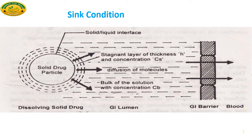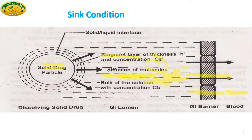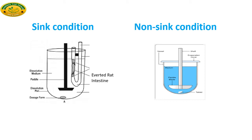From this figure, you can get a clear idea of the sink condition. Here you can see the solid drug particle — or the tablet — and the bulk of solution with concentration Cb. The solid drug particle diffuses from the stagnant layer into the bulk of solution. Immediately, whatever drug is released from the stagnant layer crosses the GI barrier into the blood — the systemic circulation — so the drug does not accumulate in the bulk solvent.